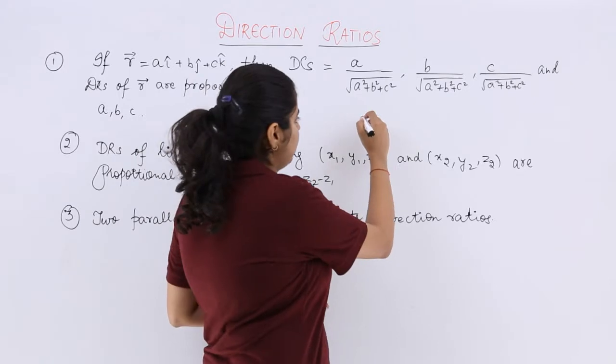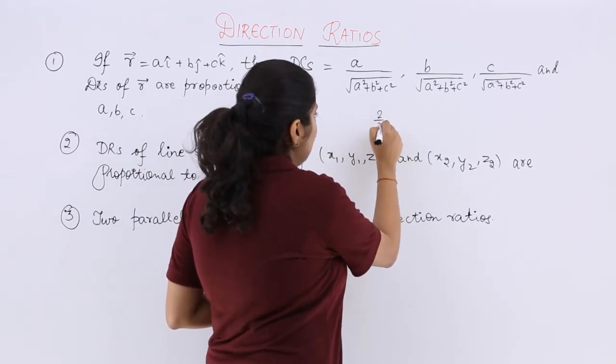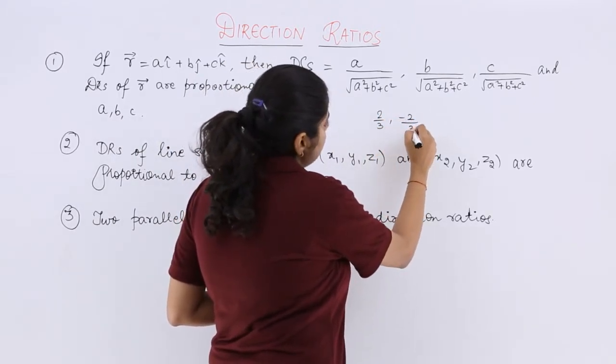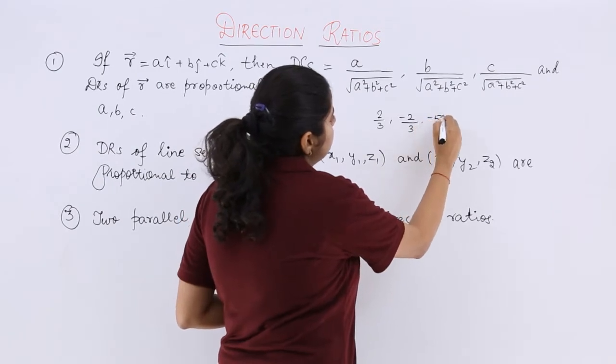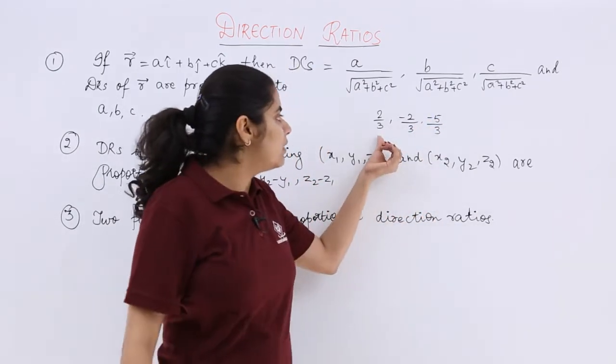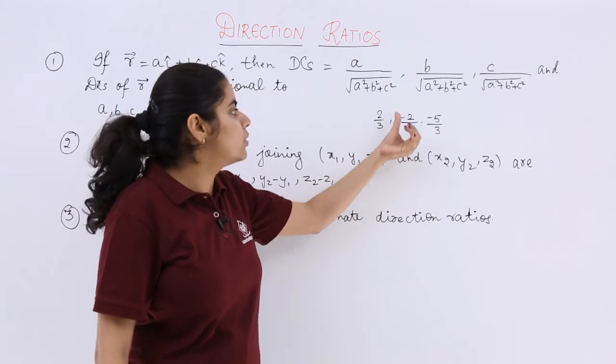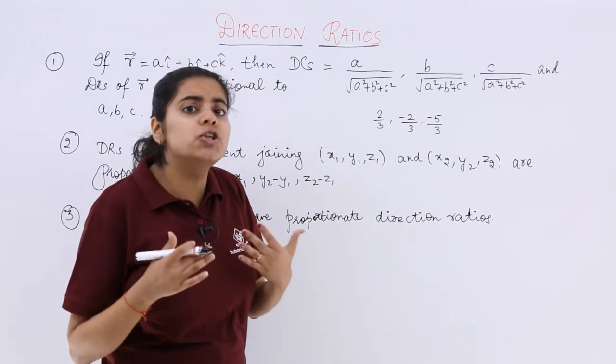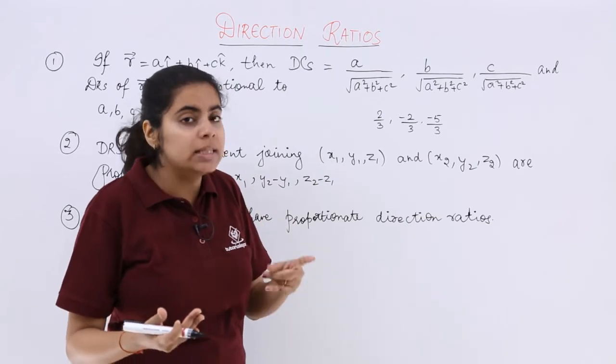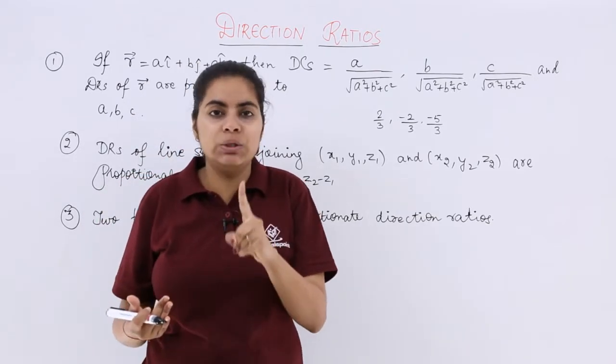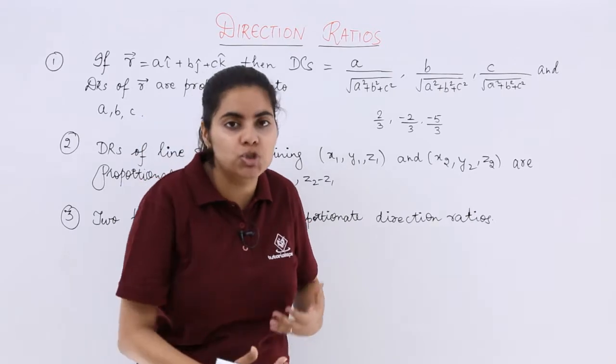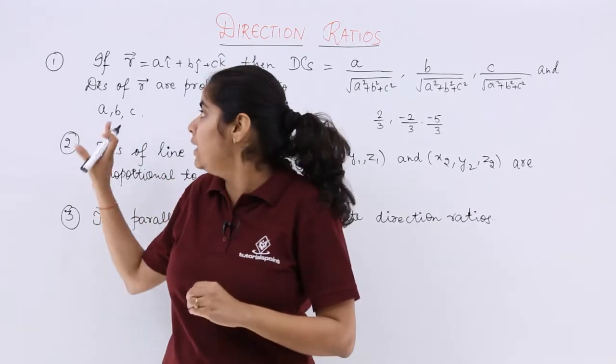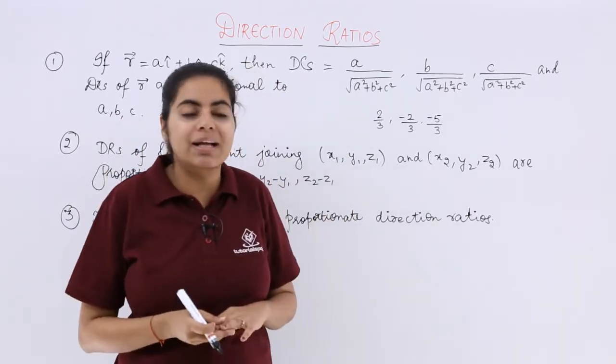Again let me tell, suppose I have L, M, N as what is given here. So I have L, M, N as 2 by 3, minus 2 by 3, minus 5 by 3 respectively. Now what should be the direction ratio? There is not one single answer to direction ratio because direction ratios are always proportional to as you can see, right? So okay, there should not be one answer.